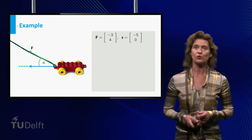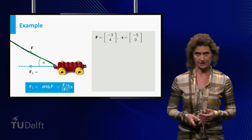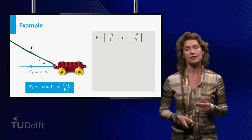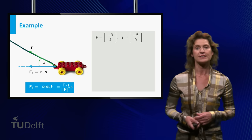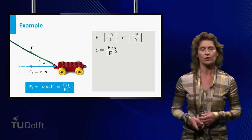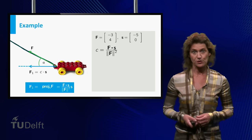Compute the resultant force F1 in the direction of S, where F1 equals C times S and C equals the dot product of F and S divided by the length of F squared.